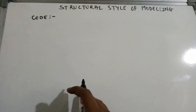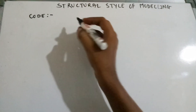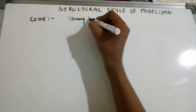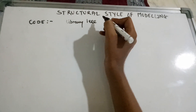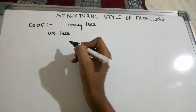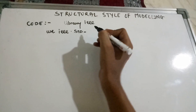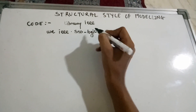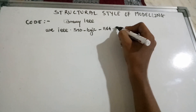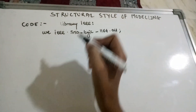For writing the code of a half adder, we need to first import the libraries: library IEEE; use IEEE.std_logic_1164.all. This is the library declaration.